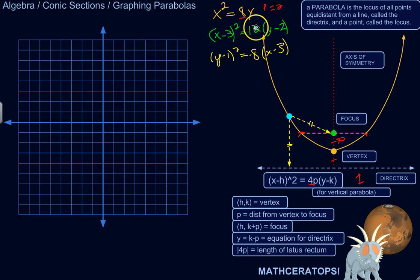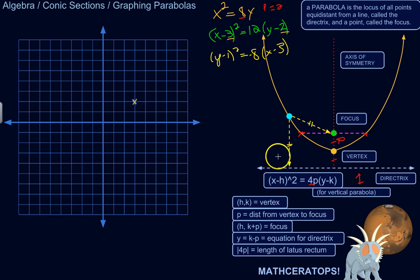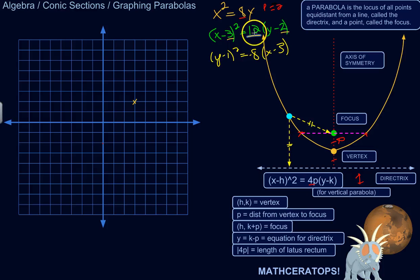First question: is this a vertical or horizontal parabola? It's vertical because the x part is being squared and the y part is not. If those were reversed, we'd think horizontal, opening left or right. The equation x minus h squared equals 4p times y minus k tells us the vertex coordinates h and k. So my vertex is at positive 3, positive 2. This part is 4p — 12 equals 4p, so p must be 3.